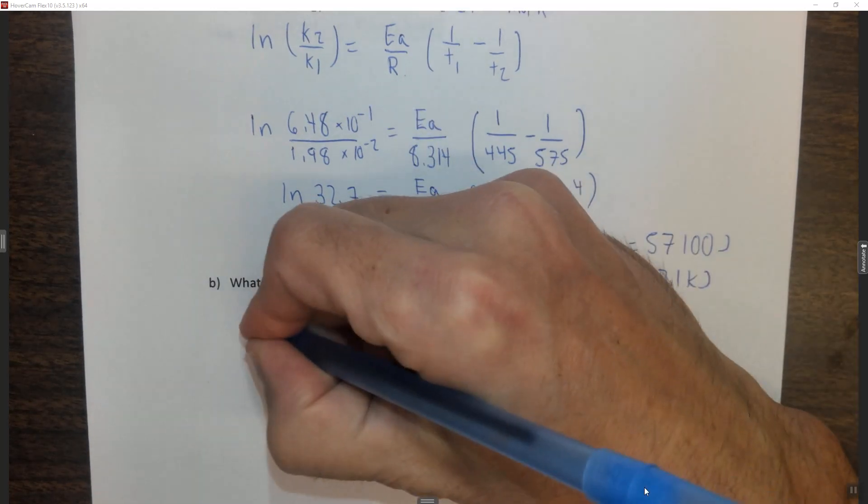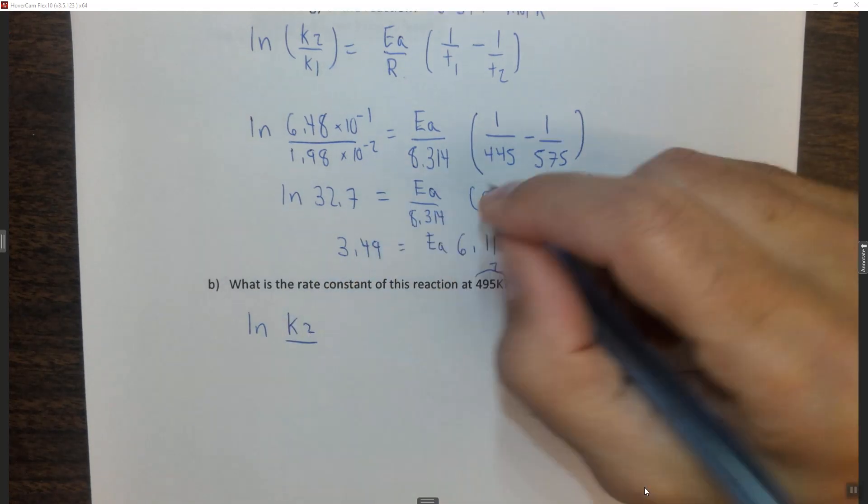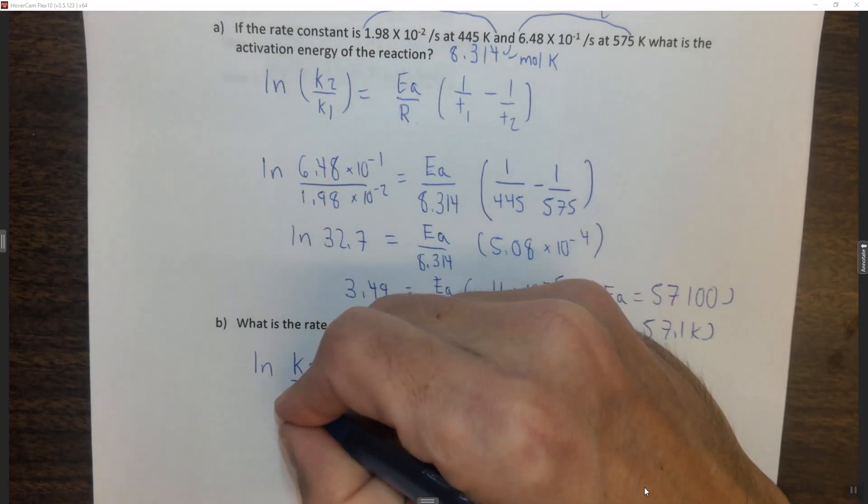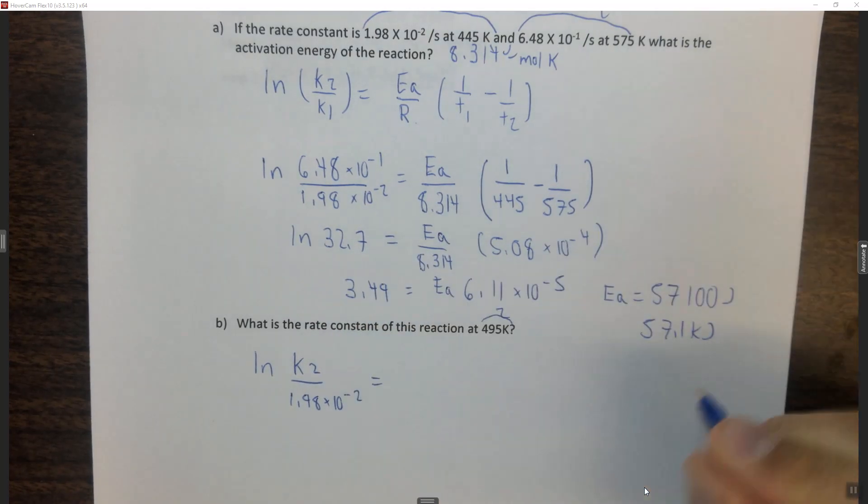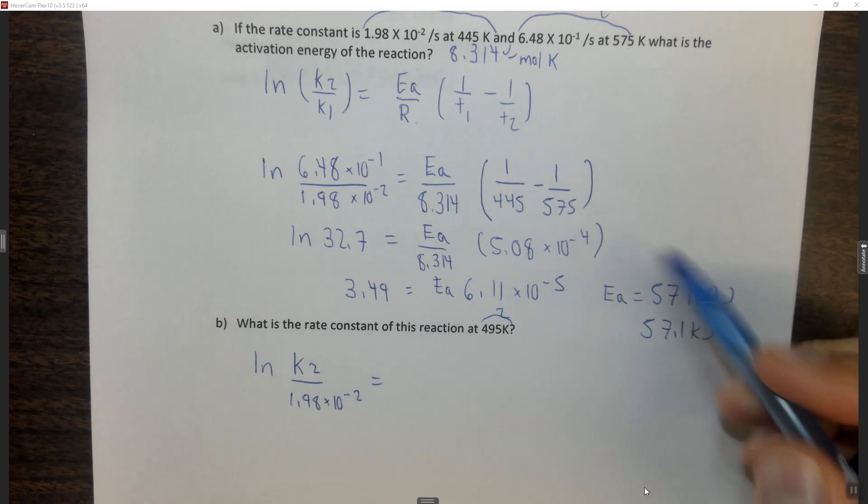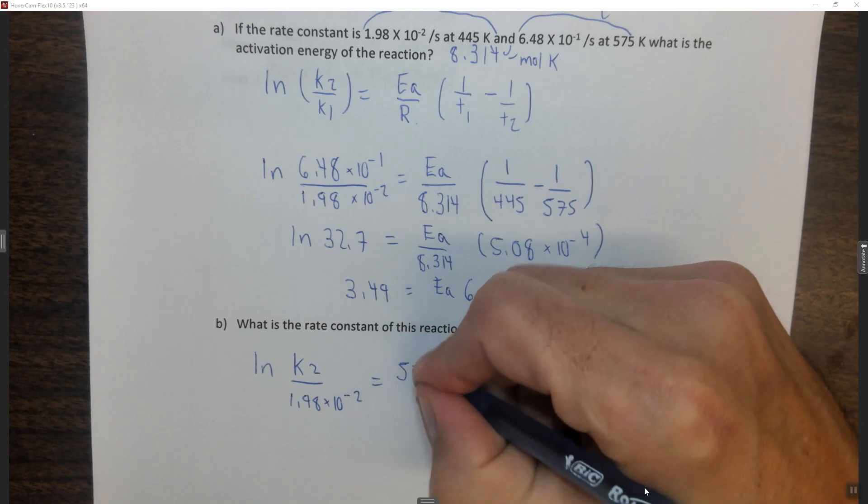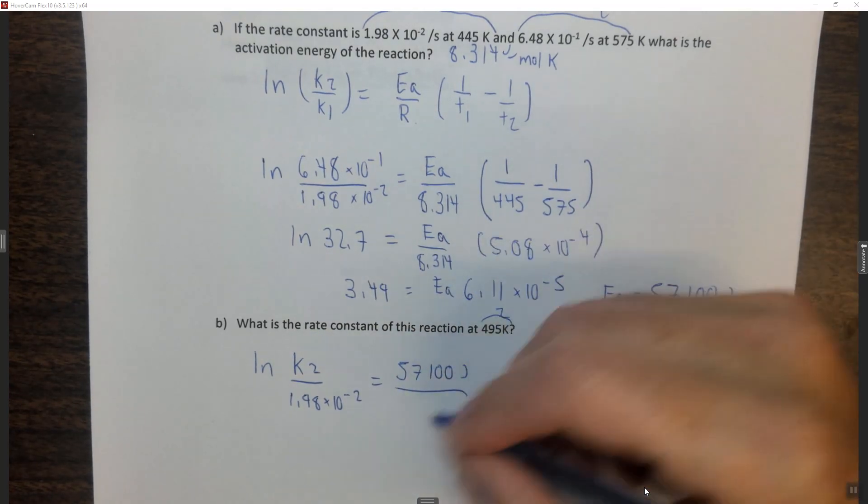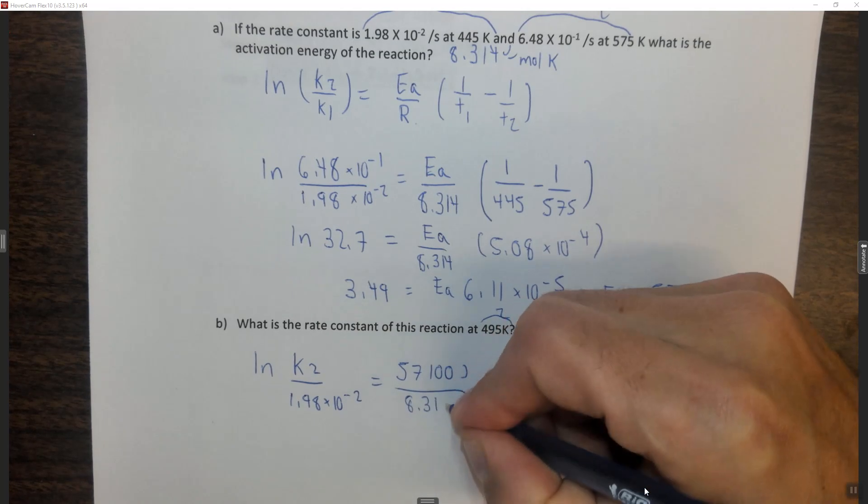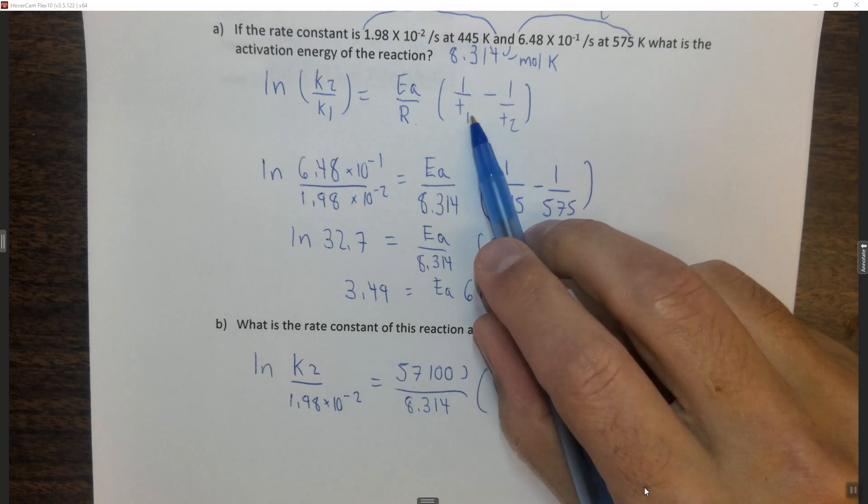In this case, the ln of k2, which is what I don't know, that's the x, over k1, which again I'm using this as 1, so it's 1.98 times 10 to the minus 2, equals Ea, which is now not the x. K2 is the variable, the thing we're trying to solve for. Make sure you plug this in in joules because the constant's in joules. So plug in 57,100 joules, which you just found in part A.